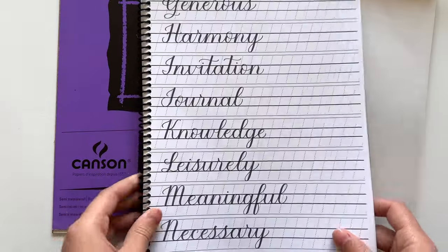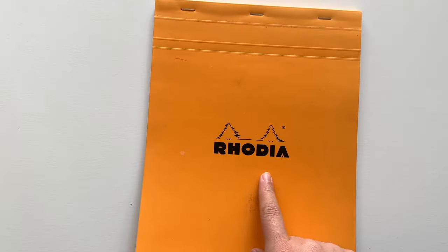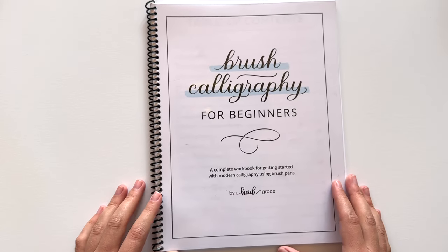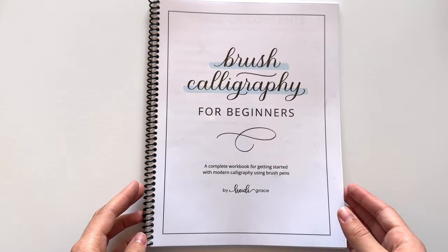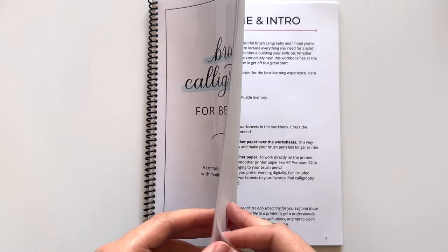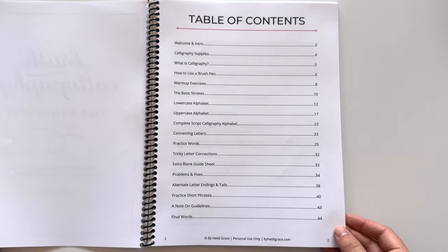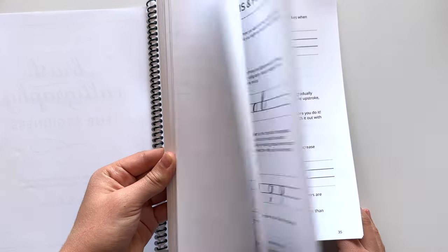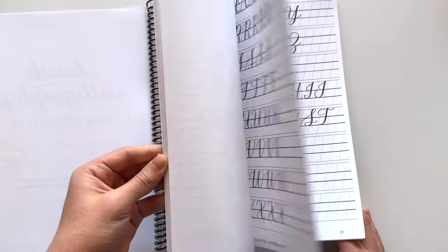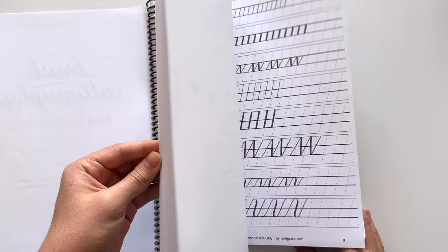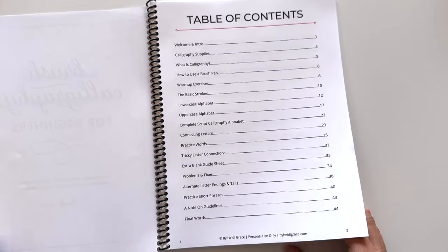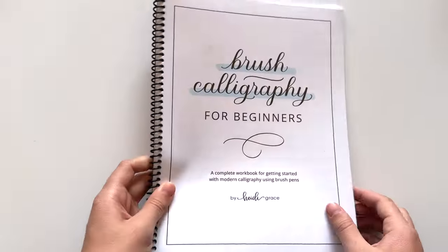If you're not using worksheets though you'll want to get paper with lines or grids like Rhodia paper. And then for worksheets you can look around online for free worksheets if you want to go that route. Or I have a workbook made specifically for calligraphy beginners that I'll link in the description along with all of these other supplies that I mentioned. I also do have some free worksheets on my website that you can grab if you're just getting started.